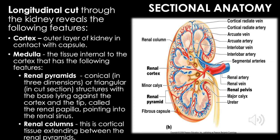Sectional anatomy: A longitudinal cut through the kidney reveals the cortex — an outer layer in contact with the capsule — and the medulla, which is the tissue internal to the cortex. The medulla contains renal pyramids, which are conical structures with the base lying against the cortex and the tip (the renal papilla) pointing into the renal sinus. Renal columns are cortical tissue extending between the renal pyramids.